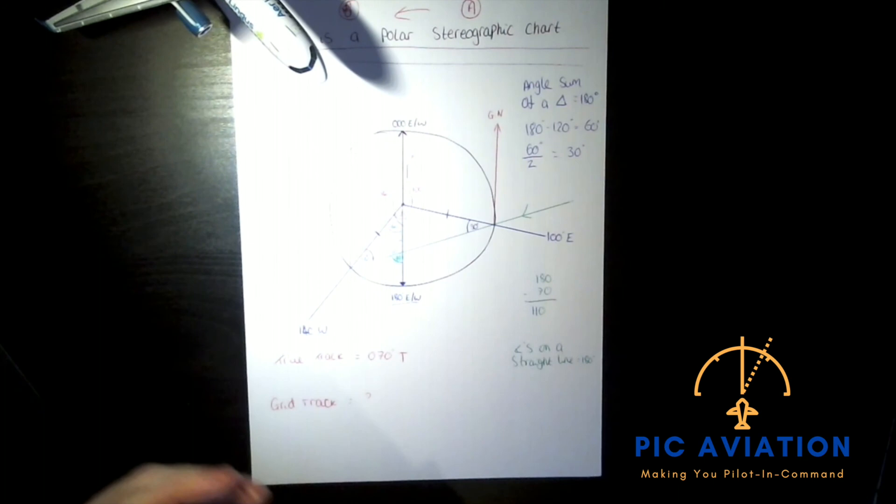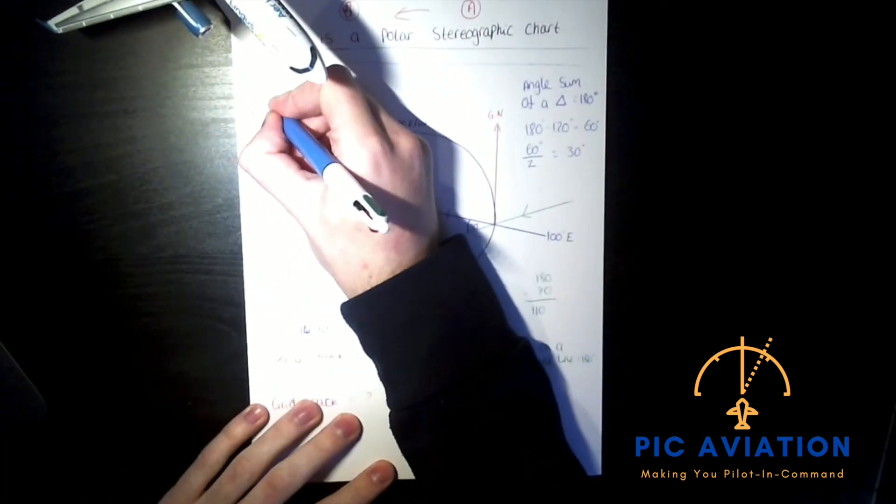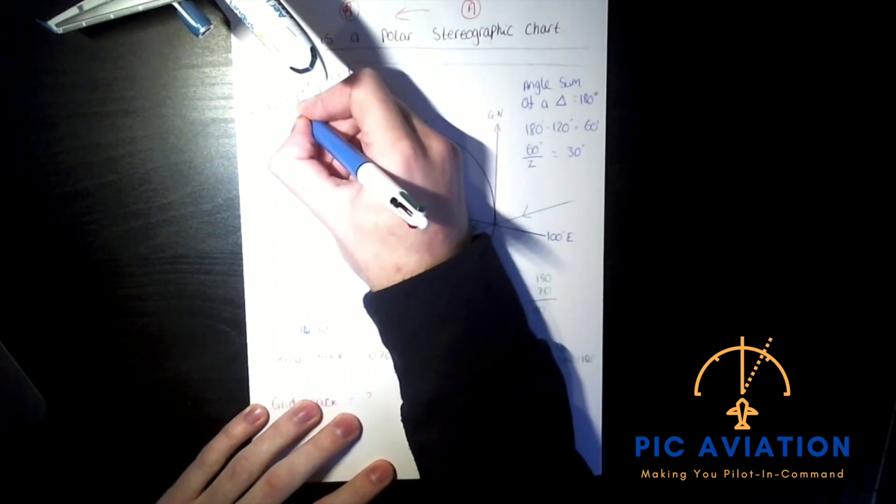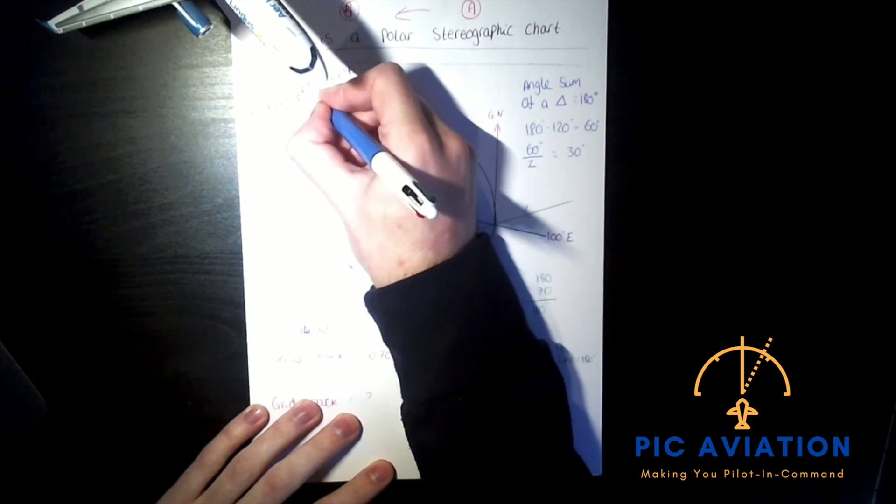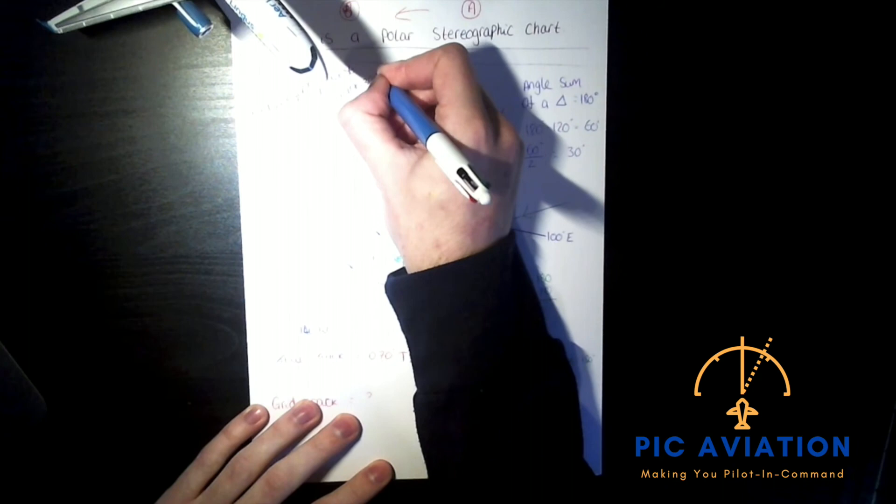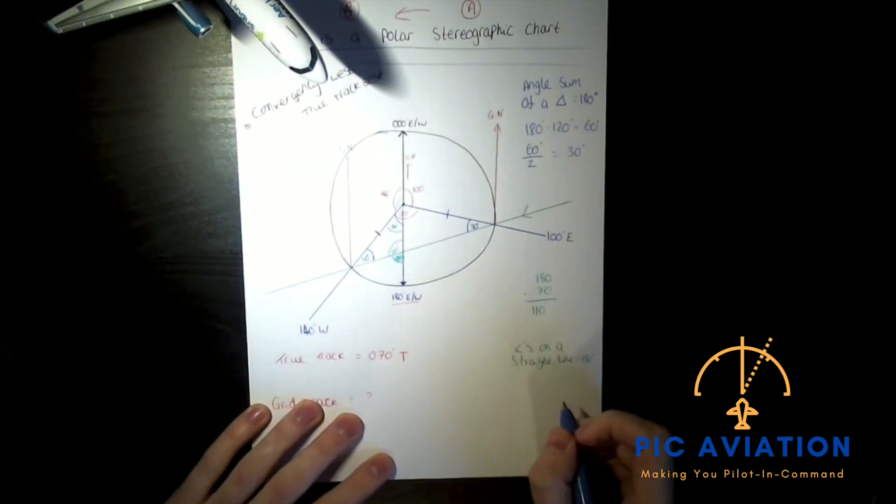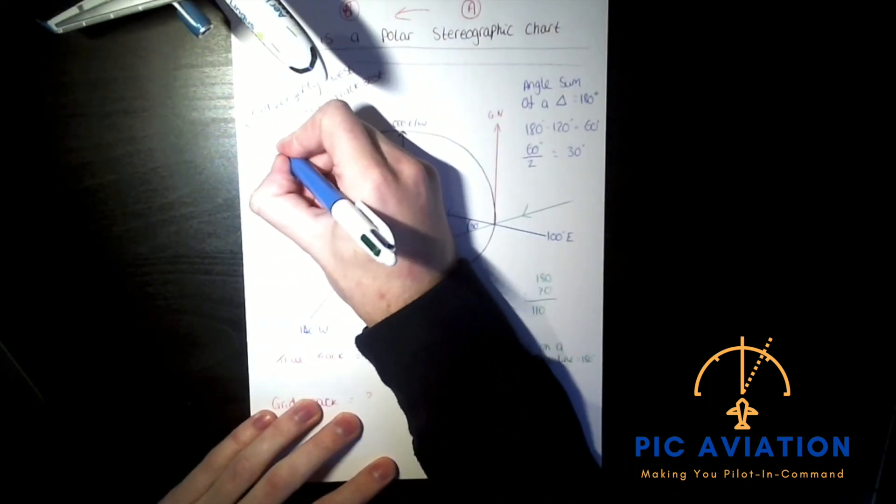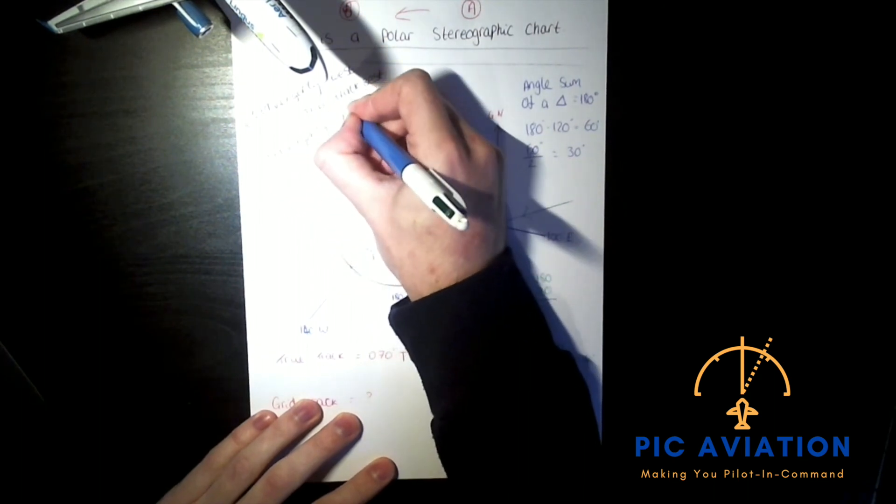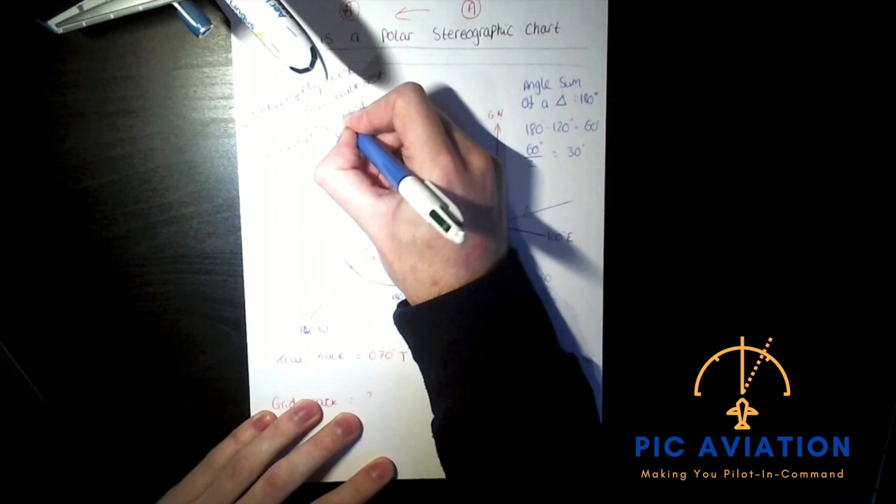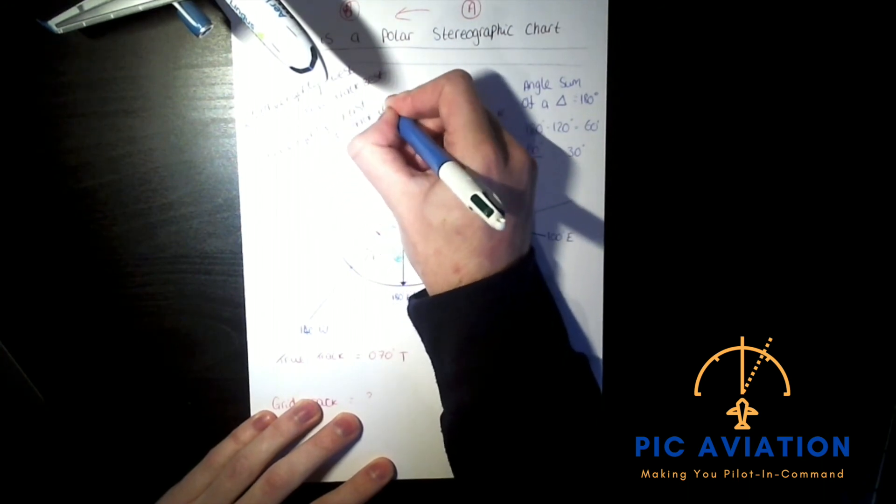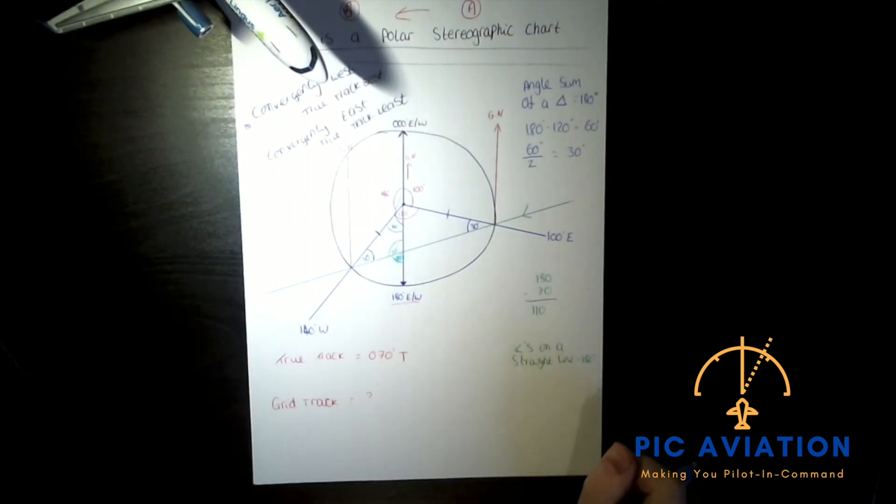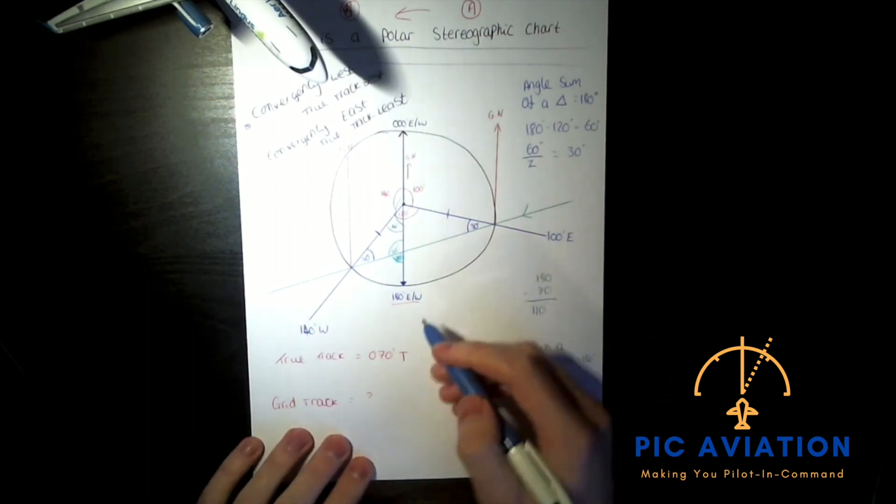We've got to remember something very important. Convergency west, true track best. Remember these are key throughout the ATPL. I like things like Cadbury staring up very tasty and all that good stuff. Convergency east, true track least. And this is great because this will serve as a gross error check later. Normally the direction of convergence is from grid north to true north at the local meridian. In this case it's going to be 180 degrees east west.